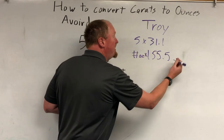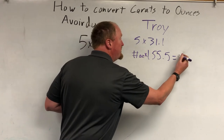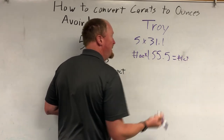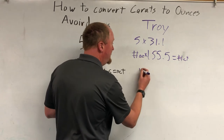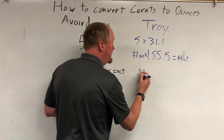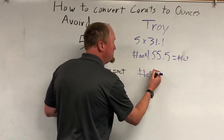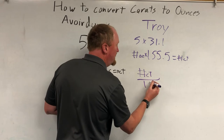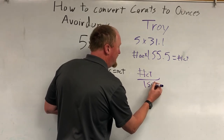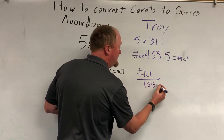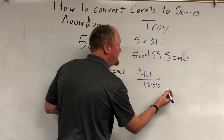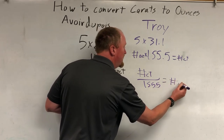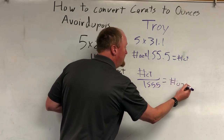So 155.5 is gonna give you the number of carats. And to go the other way, the number of carats — you just do it backwards — divided by 155.5 is equal to the number of ounces.